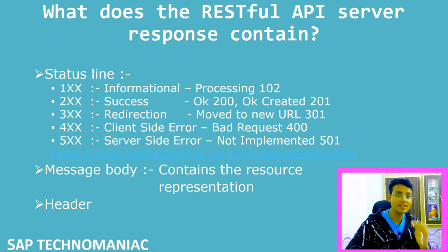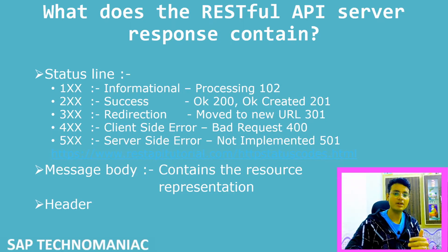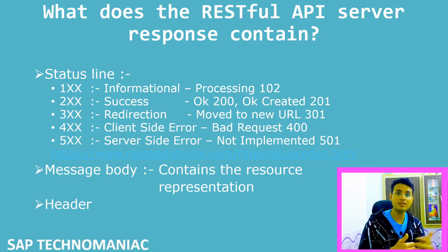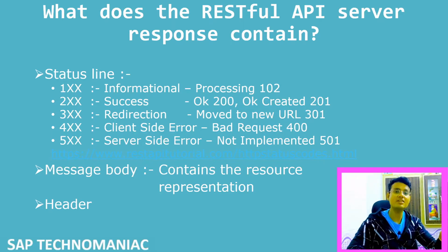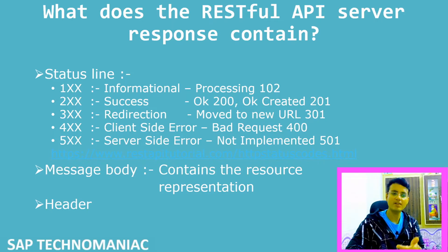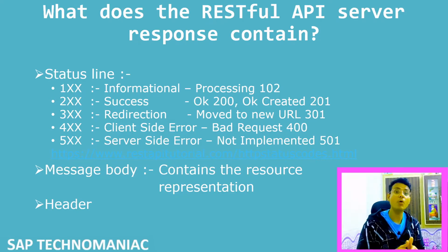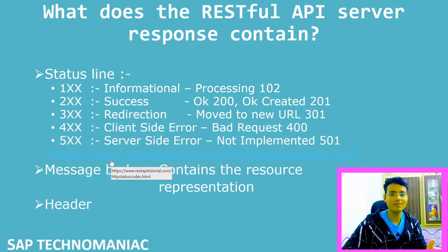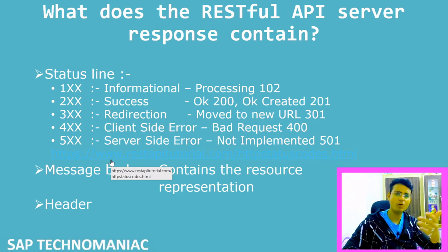If the status code starts with 3, it means it is redirecting our URL somewhere else. If it starts with 4, it means there is a client-side error — we are not able to send the data to the server. And if there are errors on the server side — the resource is not available or not implemented — then we will get a server-side error in the 500 range, like 500 or 501. Not implemented means we will get 501. If you want to see all the codes, this link is available or you can simply Google 'HTTP status code' and you will get many links with all the details.